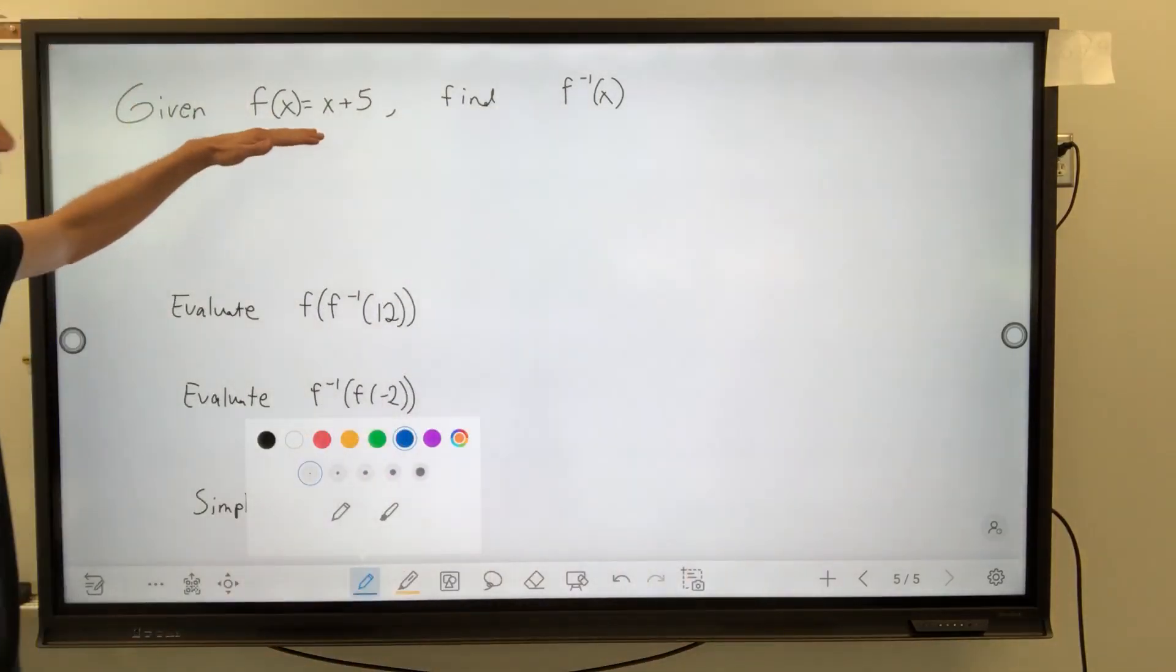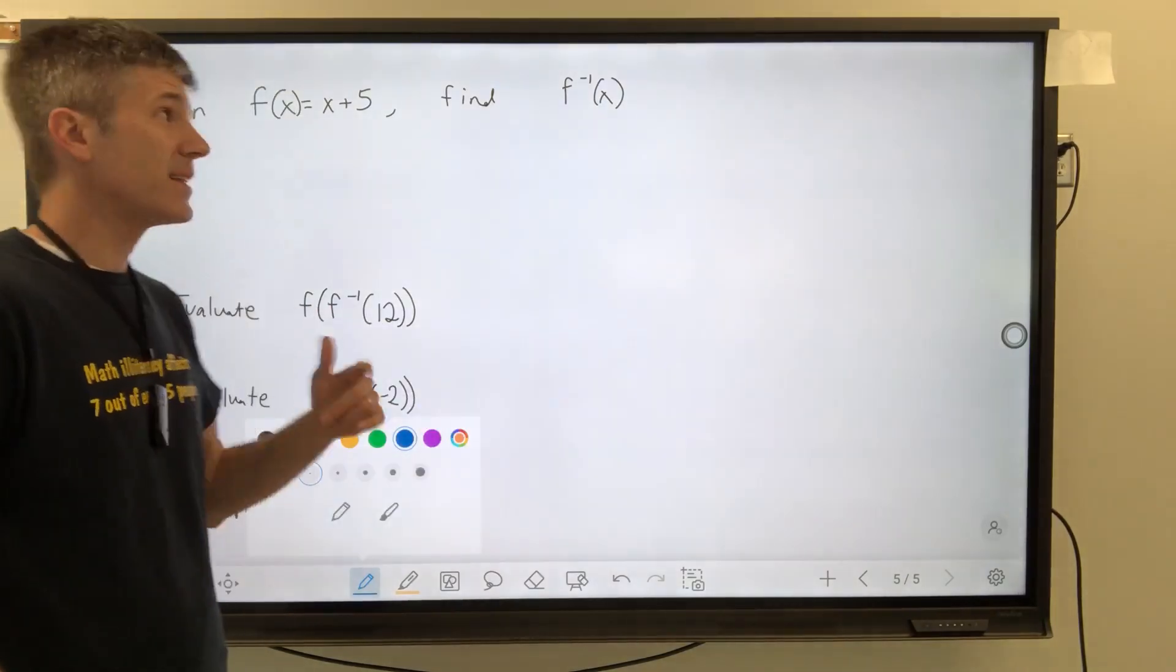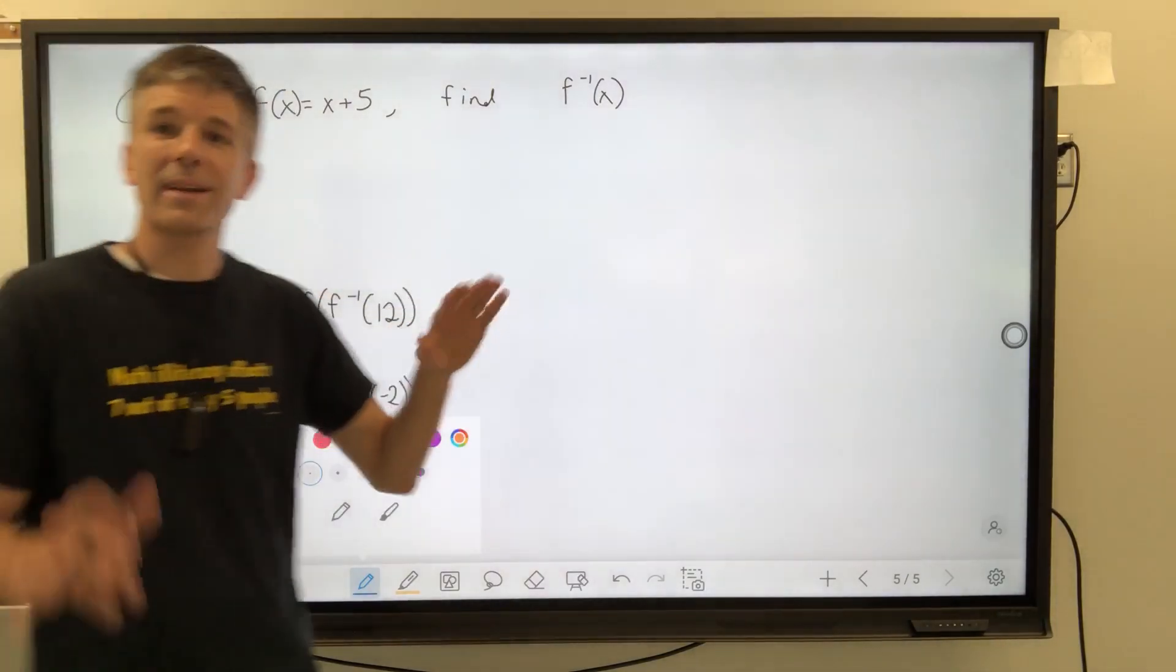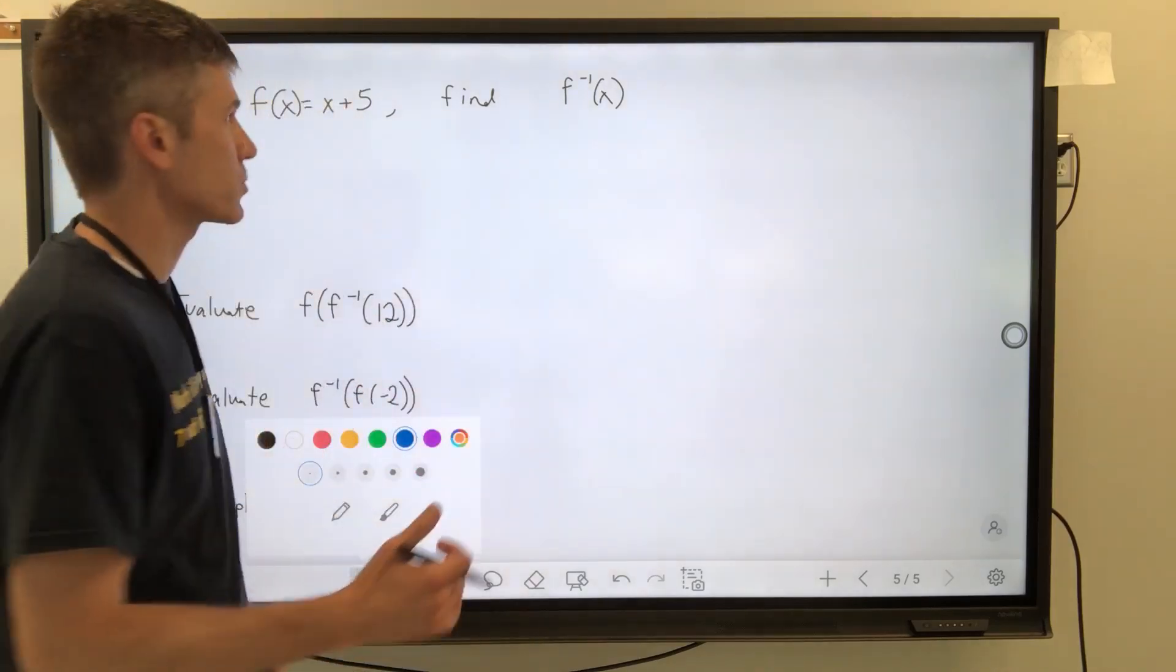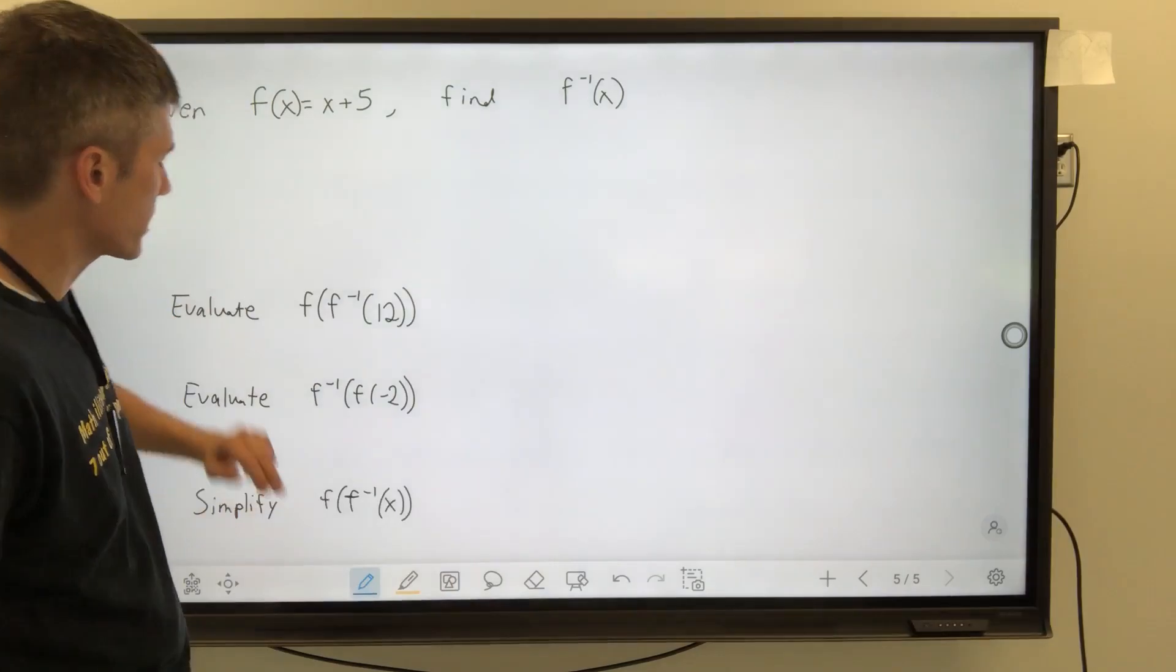They gave us f(x) equals x plus 5. Take your input, add 5. But then they say, now find the inverse. Well, it's going to undo it, so what's the opposite of adding 5? Well, subtracting 5. So let's go through the actual process.